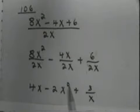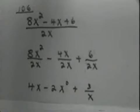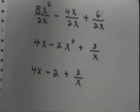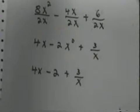Now x to 0 is 1. 2 times 1 is 2. So my final answer is 4x minus 2 plus 3 over x.